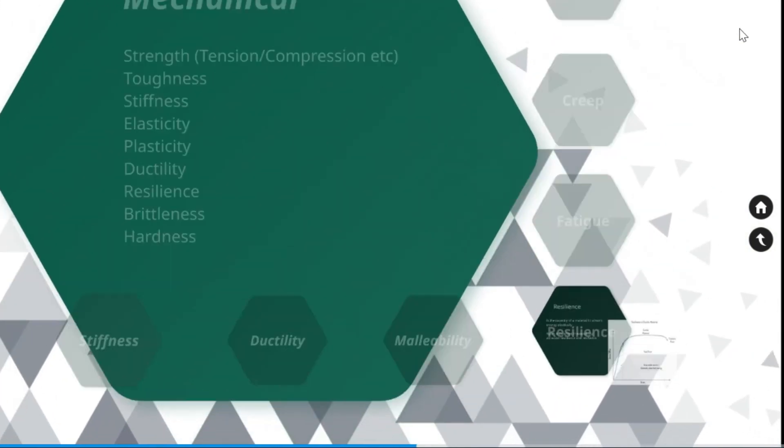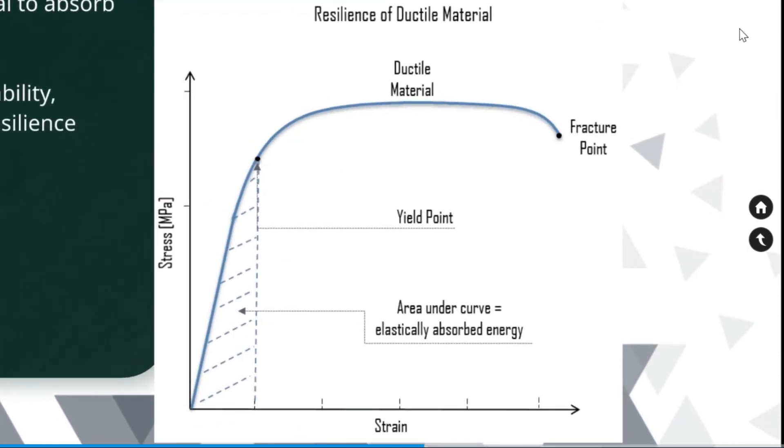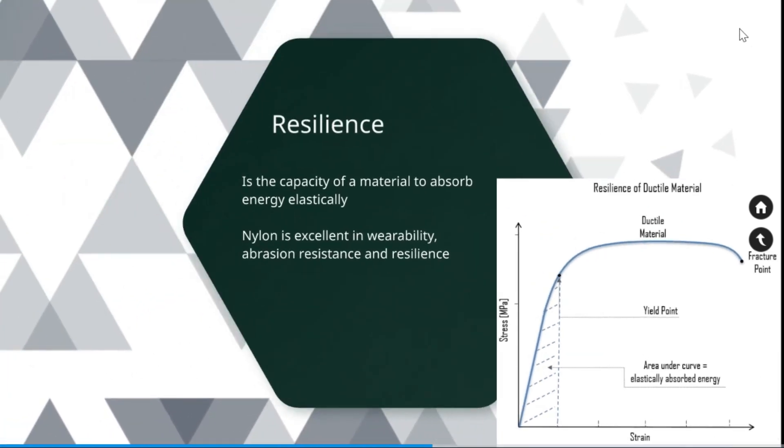Resilience. Resilience is the capacity of a material to absorb energy elastically. Nylon has excellent resilience. The stress strain diagram shows the resilience of a ductile material. The area under the elastic region is called elastically absorbed energy or resilience.